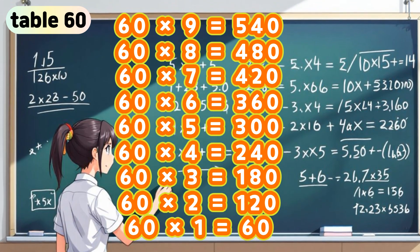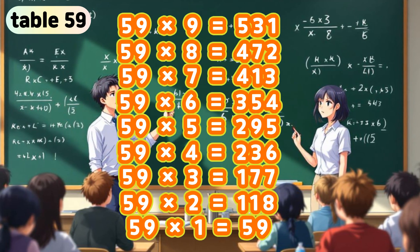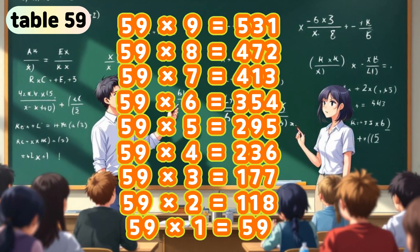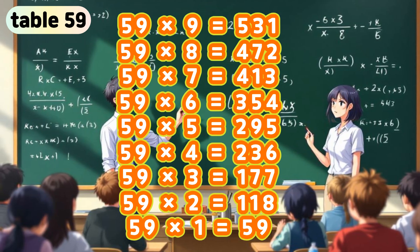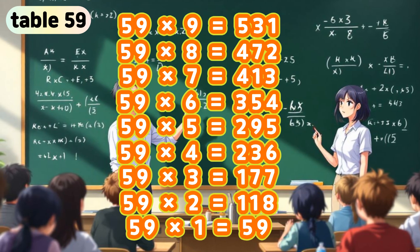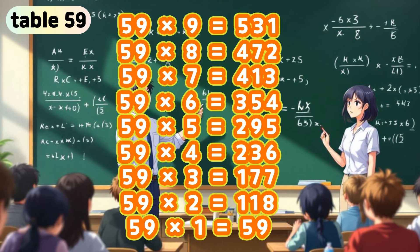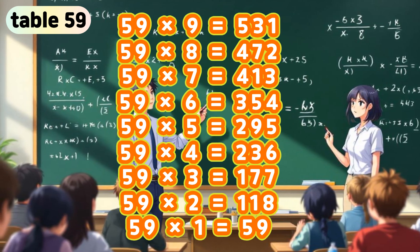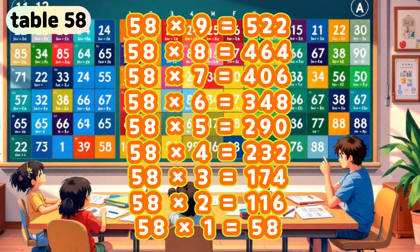60 times 1 is 60. Table 59. 59 times 9 is 531. 59 times 8 is 472. 59 times 7 is 413. 59 times 6 is 354. 59 times 5 is 295. 59 times 4 is 236. 59 times 3 is 177. 59 times 2 is 118. 59 times 1 is 59.